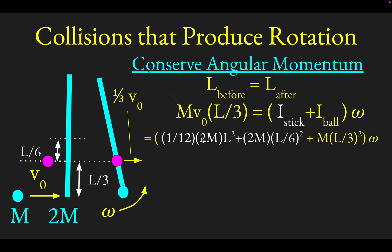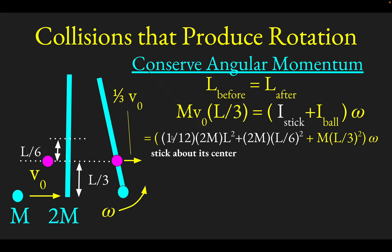The stick is handled in two terms. The first term, (1/12)·(2M)·L², is the moment of inertia of the stick about its own center. Since the rotation axis has been shifted L/6 from the center of the stick, we add a parallel axis shift term: mass times shift distance squared, which is 2M·(L/6)². Those two terms in white account for the stick's total moment of inertia about the system's center of mass.